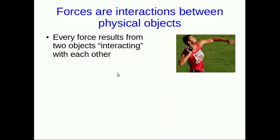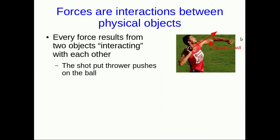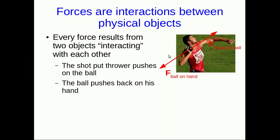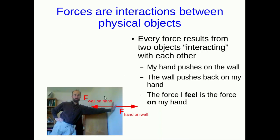All forces come about because physical objects are interacting with each other. Take this shot put thrower for example — with his hand he pushes on the shot or the ball, and the ball pushes back on his hand. Similarly, if I lean on the wall, I push on the wall and there's a force my hand exerts on it, but there's also a force that the wall exerts back on my hand. If you pick up a book, you lift it by pushing up on it with your hand, and you'll feel a force that the book exerts back down on your hand.